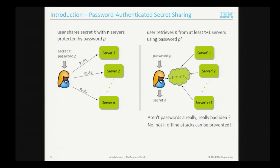Typically, passwords are stored in hashed form, allowing a single server to verify whether P prime matches P. The problem is that if a single piece of information lets you verify a password, once it's stolen an adversary can make guesses and verify correctness. Given the low entropy of passwords and the efficiency of such computations, you can make hundreds of millions of guesses — meaning the average password is broken in a very short time. But if you avoid a single point of verification and share it across several servers, passwords provide really good security.